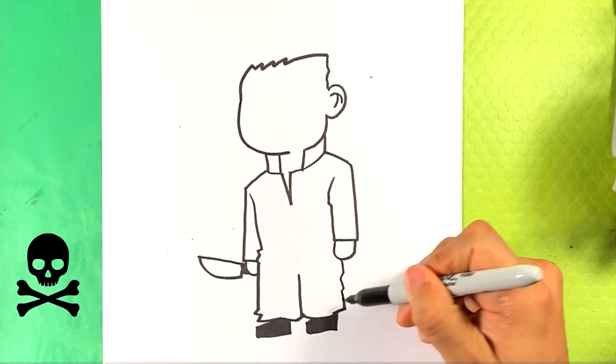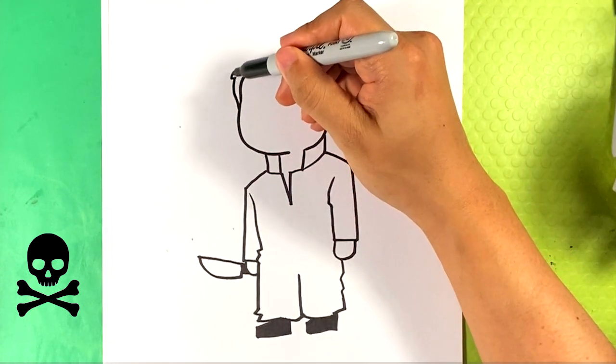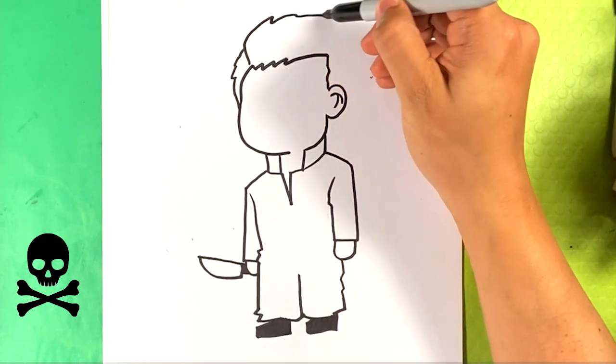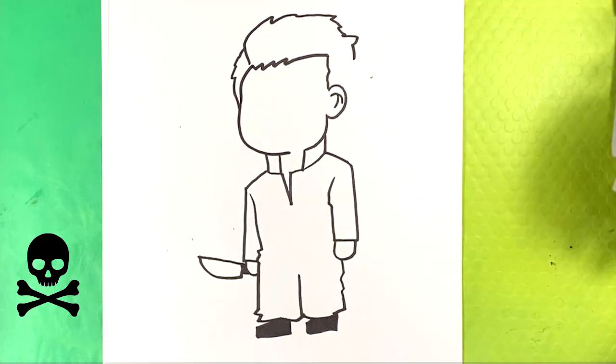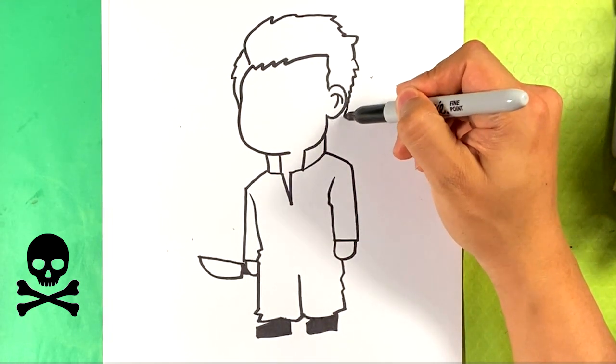Over here. Going to go over here. This side. Line right there for the hairdo. Back here for the hairdo. Going to go down here and down a bit.